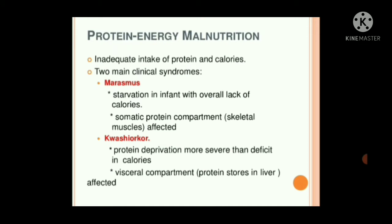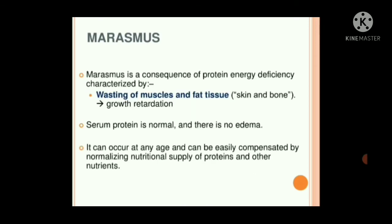Next is protein energy malnutrition. This occurs due to inadequate intake of protein and calories. There are two main clinical syndromes: marasmus and kwashiorkor. In marasmus, there is starvation in the infant with an overall lack of calories affecting somatic protein compartments.